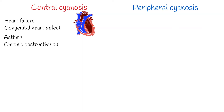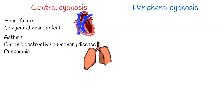Lung problems, such as asthma, chronic obstructive pulmonary disease (COPD), or pneumonia, can cause central cyanosis by reducing the amount of oxygen that is absorbed into the bloodstream.